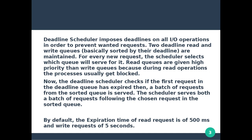There are two queues — read queue and write queue. When a new request comes in, the scheduler selects one of the queues for service. The read queue is given higher priority than the write queue, because a read operation generally causes the process to block. Write operations are more complex than read operations, so read queue gets higher priority.